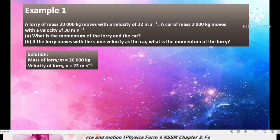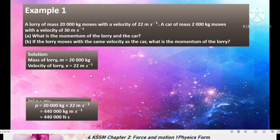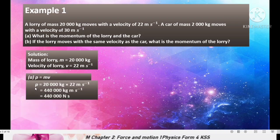We can list down all the information. Mass of lorry m, 20,000 kg. Velocity of lorry v is 22 m per second to the power negative 1. Now we want to determine momentum. Use the formula, p equals to mv. m is 20,000, v is 22. Look at the unit. The unit must be SI unit. Sometimes the unit for v given in kilometer per hour. Then you need to convert to meter per second. So we get 440,000 kg meter per second negative 1.